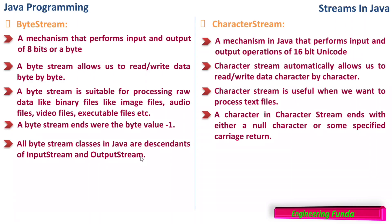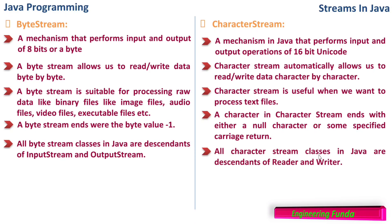All byte stream classes in Java are descendants of InputStream and OutputStream — these are the parent classes of all byte stream classes. All character stream classes in Java are descendants of Reader and Writer — Reader is for reading and Writer is for writing, just as InputStream is for taking input and OutputStream is for giving output. I hope this is clear, my dear friends. Thank you for watching this video — stay tuned for more videos on Java programming.